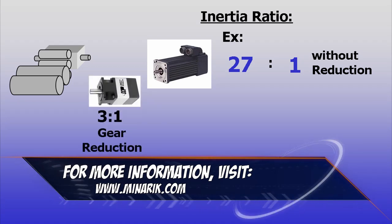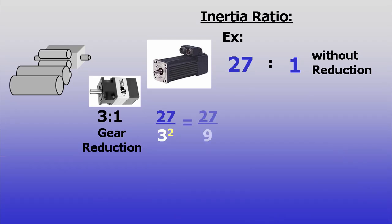If a 3 to 1 gear reducer is added, it reduces reflected inertia by 3 squared, or a factor of 9. The new inertia ratio will go from 27 to 1 to 3 to 1.